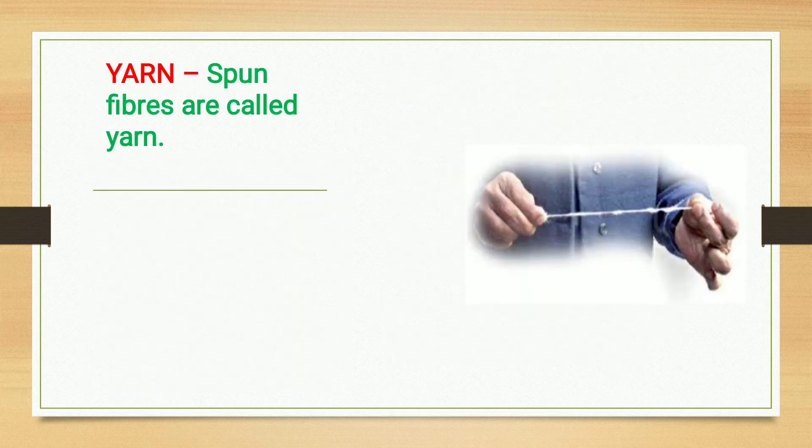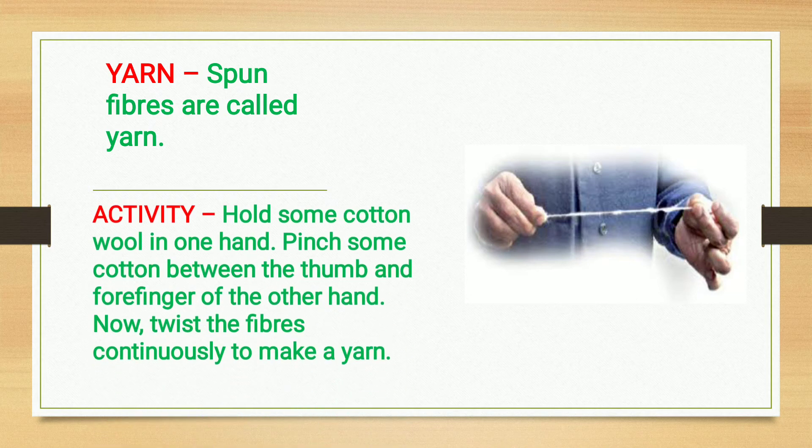Yarn. Spun fibers are called yarn. Let us check another activity. Hold some cotton wool in one hand, then pinch some cotton between the thumb and forefinger of the other hand. Now twist the fibers continuously to make a yarn.